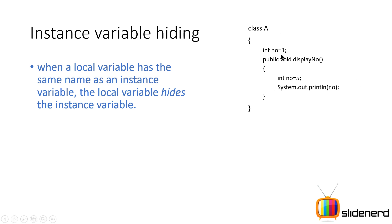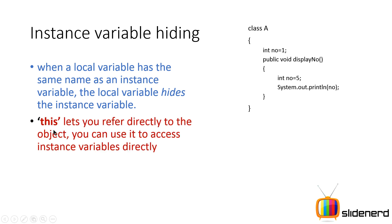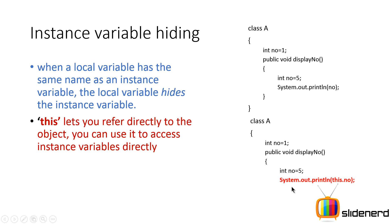So what if you want to print the instance variable 'number = 1' instead? That is when you use the 'this' keyword. In class A, with instance variable 'number = 1' and local variable 'number = 5', you say 'System.out.println(this.number)'. This means: call the current object and display its number variable. Since every object has 'int number = 1', the value one will be printed.